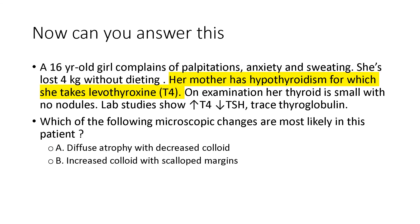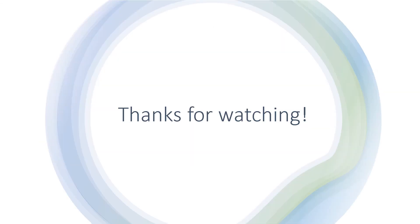That's what the tricky question wanted you to figure out: the mother has hypothyroidism and takes levothyroxine, giving the 16-year-old girl access to T4, which she could be abusing — possibly to lose weight, especially as a teenager. The finding you should choose on microscopic examination is diffuse atrophy with decreased colloid, supported by the finding that her thyroid is small with no nodules on examination. I hope you find this helpful and thanks for watching.